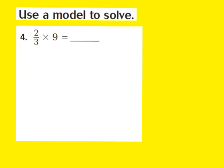Now let's take a look at question number 4. Once again, question 4 says to use a model to solve. For number 4, they give us the fraction 2/3rds times the whole number 9. If I'm going to use a model to solve, I need to know the denominator in the given fraction — which is a 3. So I have to divide our whole number 9 into 3 equal groups. I know that 9 divided by 3 is going to give me 3, so I'm going to have 3 equal groups of 3.